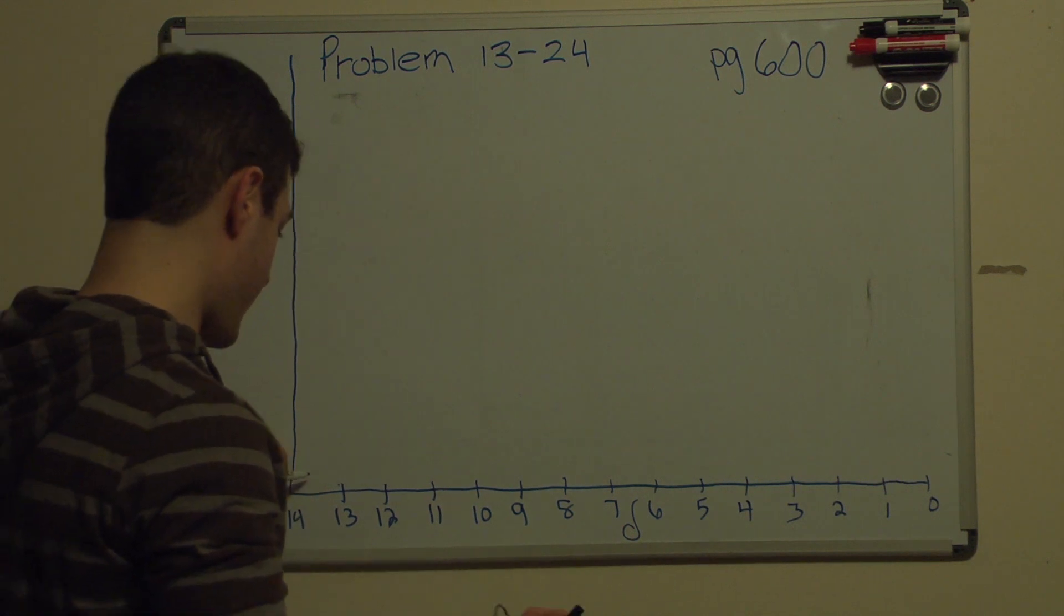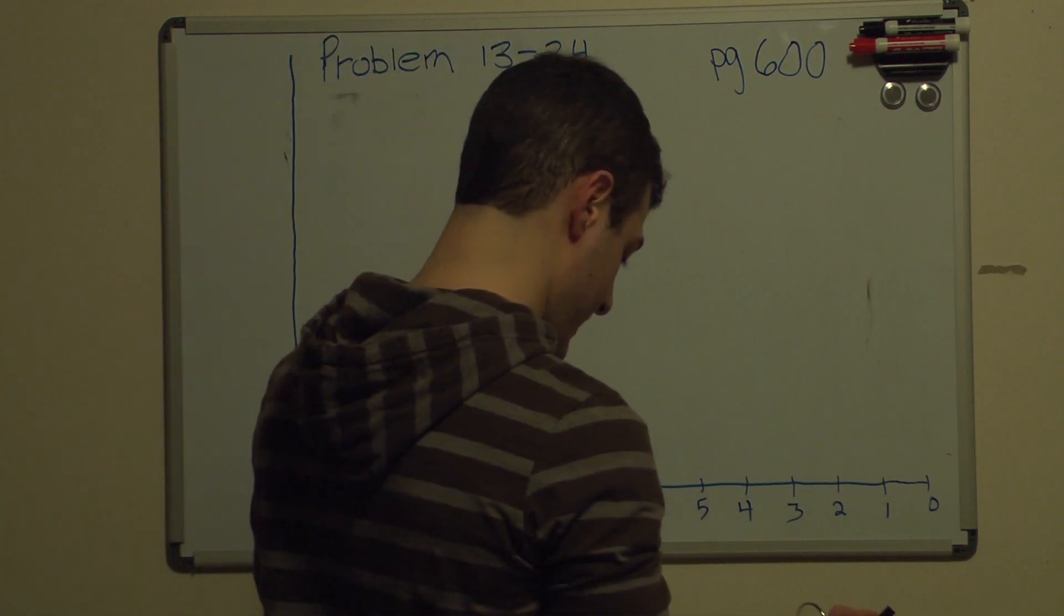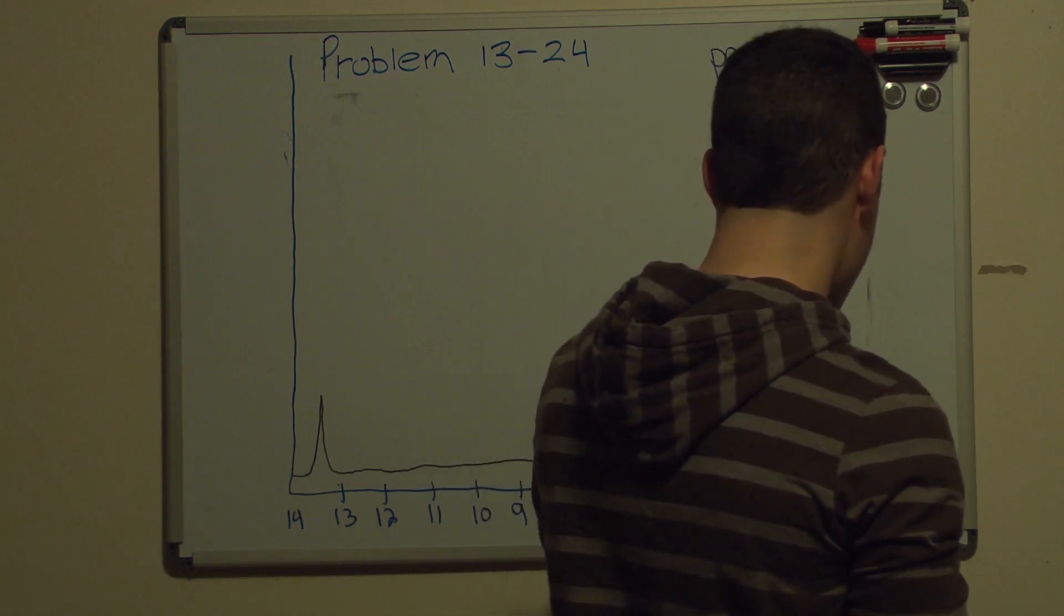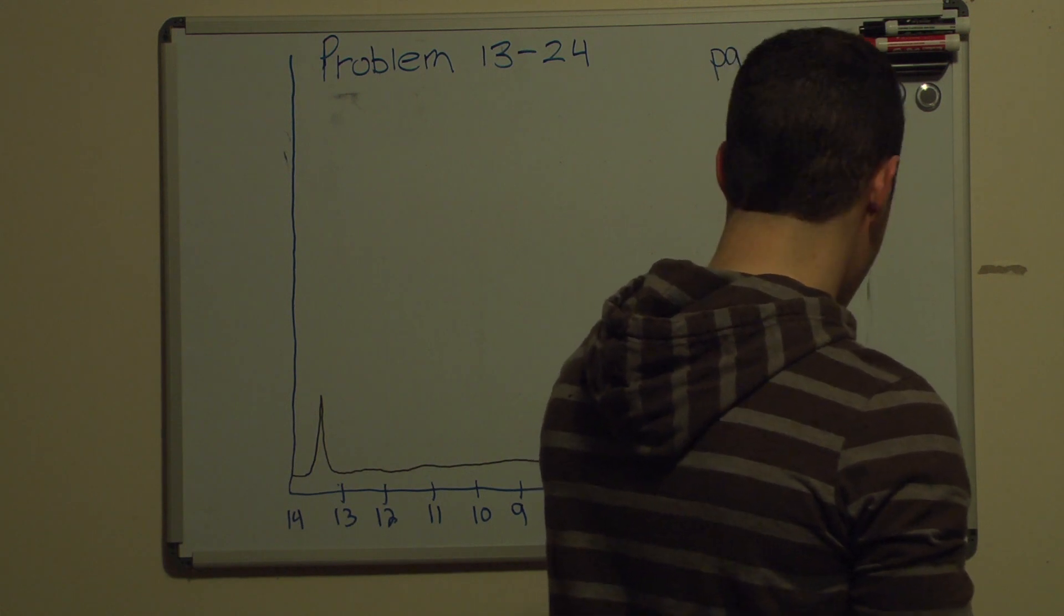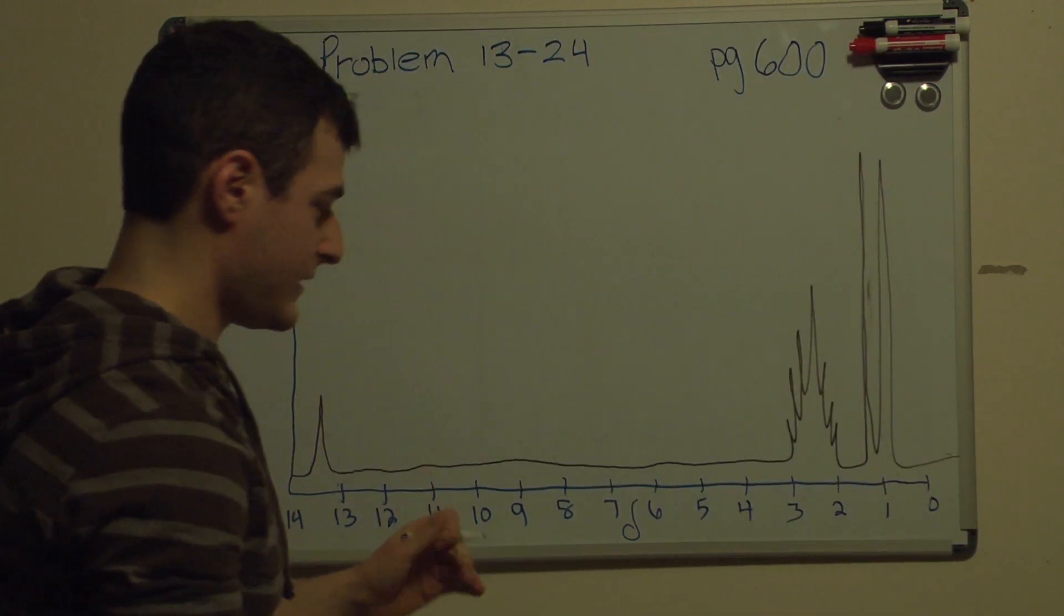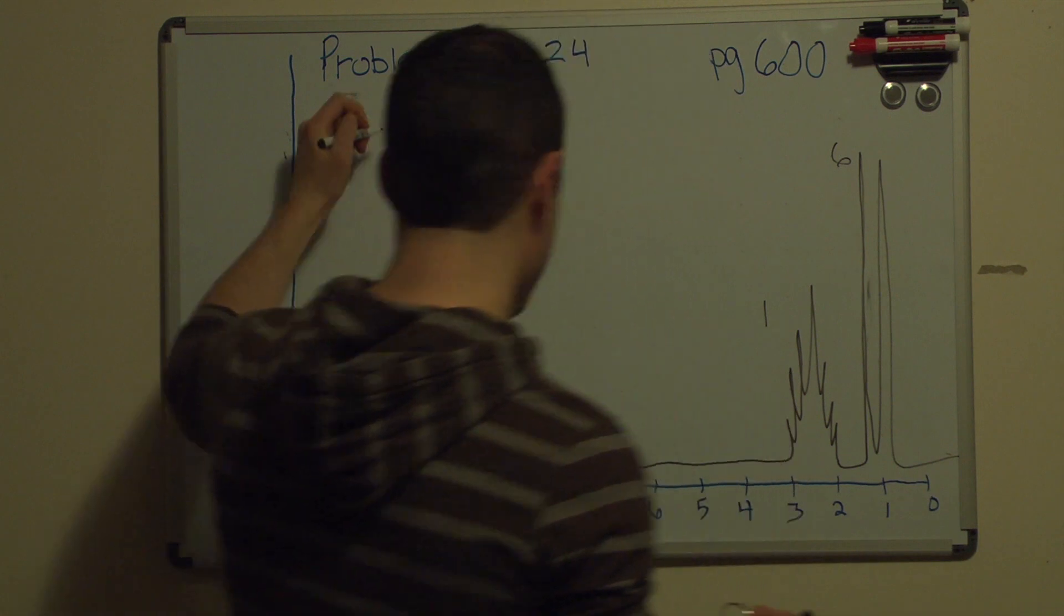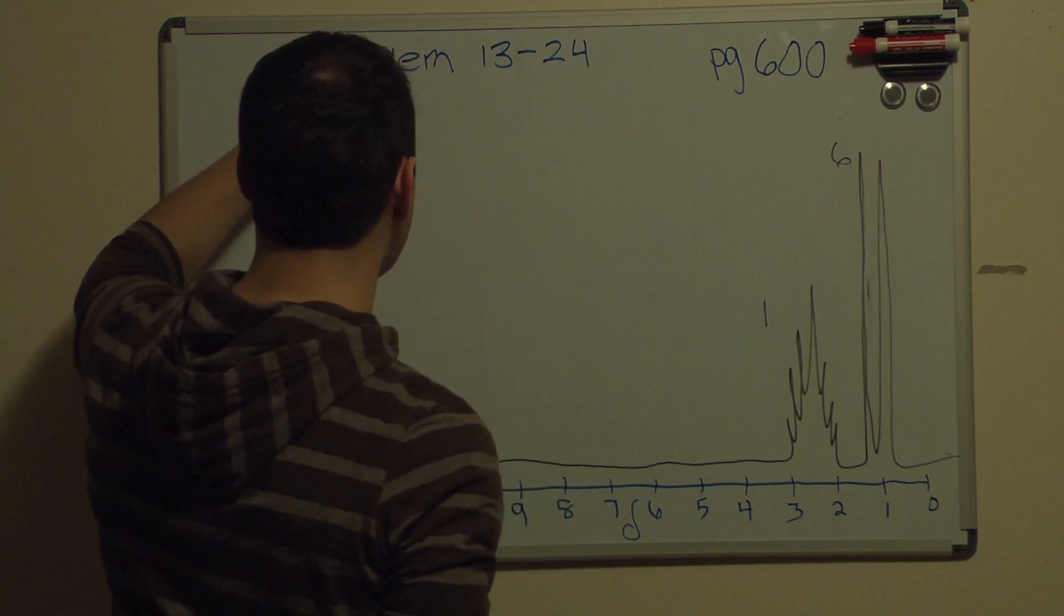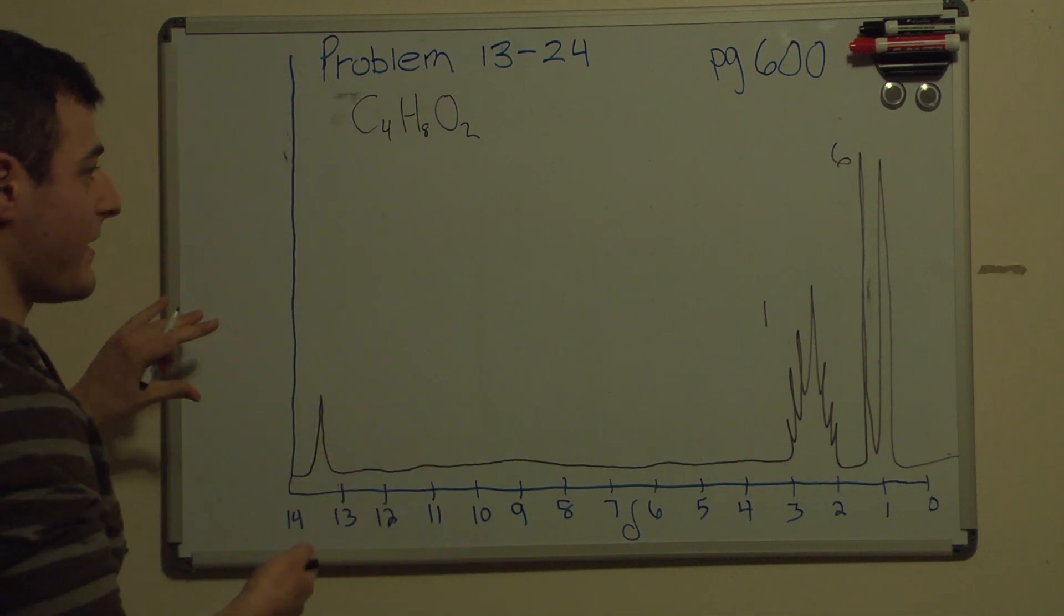It is a little difficult to make out all the peaks I'm drawing it right here. So we have a multiplet and then a doublet. Okay, so this is in general what it looks like on your page and it gives us a formula for this. So it's C4H8O2. Okay, so now we're ready to tackle this problem.